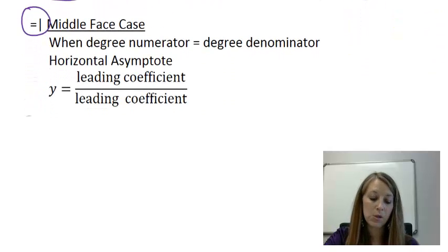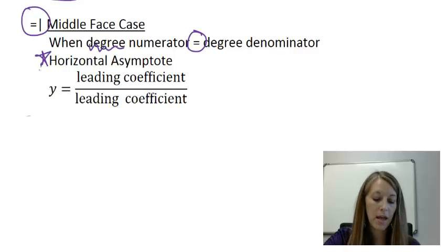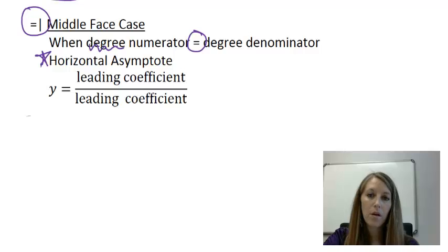In the middle face case is when the degree of my numerator is equivalent to my denominator. That also gives me a horizontal asymptote, which is drawn the same way as my first one here. What we need to do is we need to look at the leading coefficient of the numerator and the leading coefficient of the denominator. So for review, coefficient means the numbers in front of the variable, and the leading coefficient is the number in front of the variable with the highest exponent, the one in front of our degree. And again, we'll see examples of this in a minute.